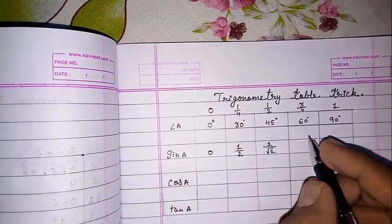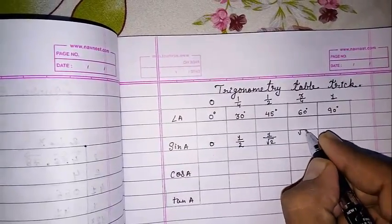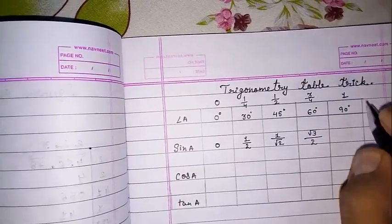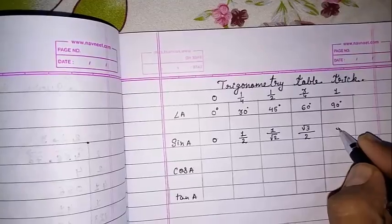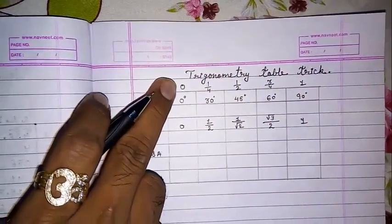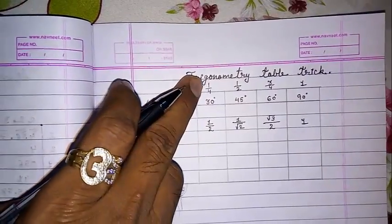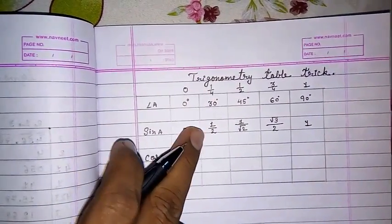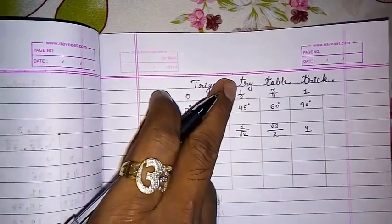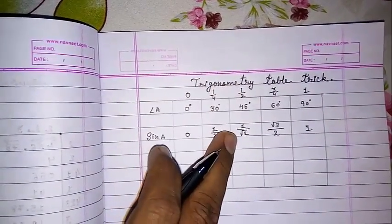Now we cannot find root of 3, so it's root 3 by 2. Then root of 4 is 2, so 1 by 2, and root of 1 will be 1. This way: root of 0 is 0, root of 1 is 1, and root of 4 is 2, so 1 by 2.